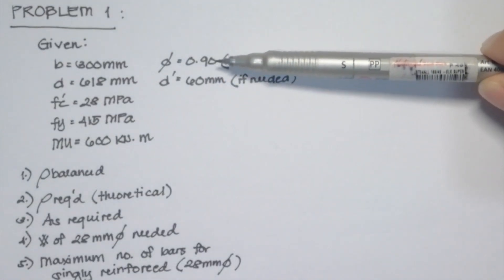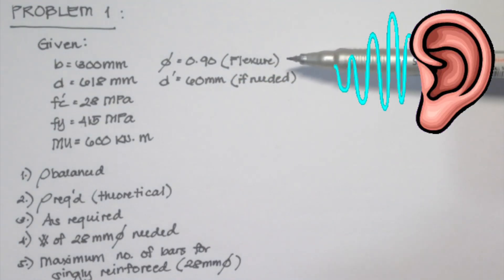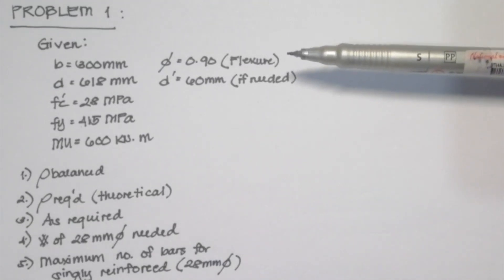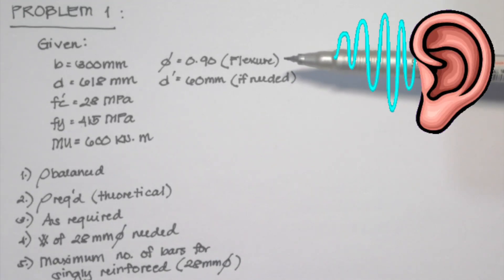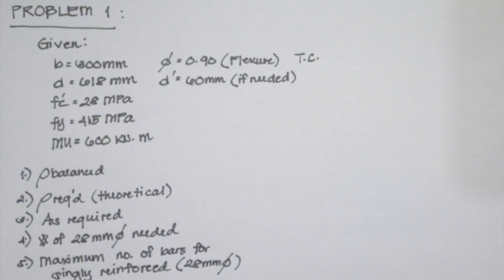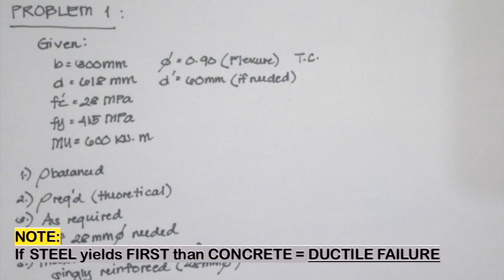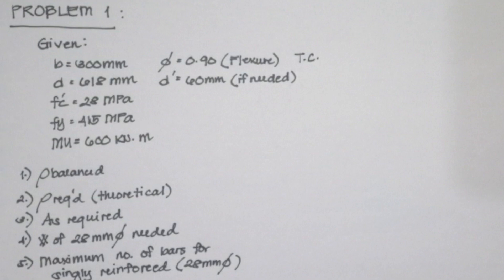The reduction factor is also given and it is equal to 0.90 for flexure. When we are designing our beams, we need to put it under tension control section, which is why we always use 0.90. When a beam is under tension control section, it lets the steel yield first before concrete because it is safer — there will be a ductile failure during events such as earthquakes, allowing occupants to observe the damage and evacuate immediately.